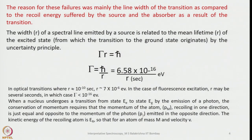The width Γ of a spectral line emitted by a source is related to the mean lifetime τ of the excited state from which the transition to the ground state originates by the uncertainty principle: τΓ = ℏ, which equals 6.58 × 10⁻¹⁶ eV·s over τ in seconds.